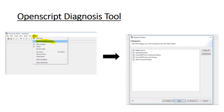Before listing the different issues people face during record and playback, I want to suggest a wonderful inbuilt tool called the Diagnostic Tool. Once you open OpenScript, go to Help and you will see the OpenScript Diagnostic Tool. Open it, leave all checkboxes checked, click Next and run it. Whenever you face any issue, either during recording or playback, the first step should be to run this diagnostic tool. It will try to resolve problems on its own.